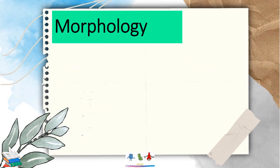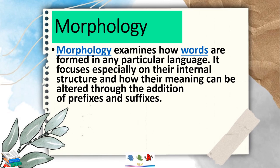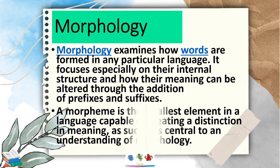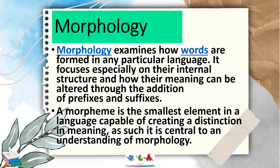What is morphology? Morphology examines how words are formed in any particular language. It focuses especially on their internal structure and how their meaning can be altered through the addition of prefixes and suffixes. Prefixes are the word part added before the root word, and suffixes are the word part added after the root word. A morpheme is the smallest element in the language capable of creating distinction in meaning, and as such, it is central to an understanding of morphology.